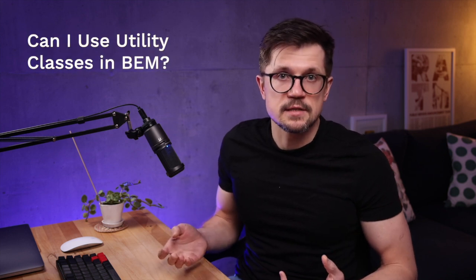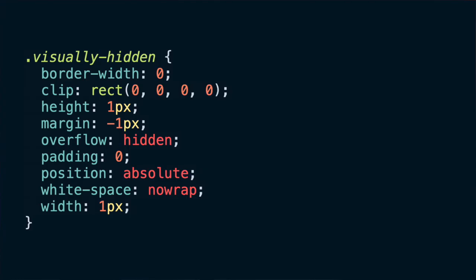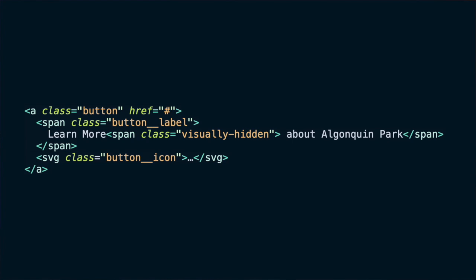Can BEM be used with utility classes? I don't see why not, even though it sort of goes against the BEM philosophy. I do it all the time because utility classes can be extremely helpful when used in moderation. For example, in our project I have a utility class called 'visually-hidden' — a common method for hiding an element visually but keeping it accessible for screen readers. I could have made this another element inside the button, but since it's such a common pattern, abstracting it into a utility class makes perfect sense. The key is staying consistent.